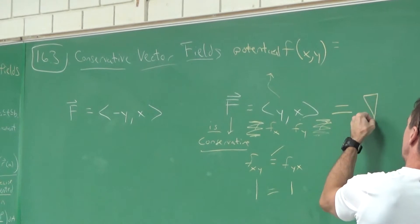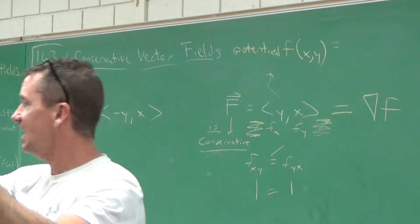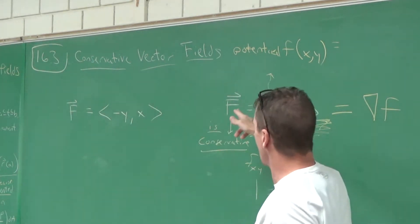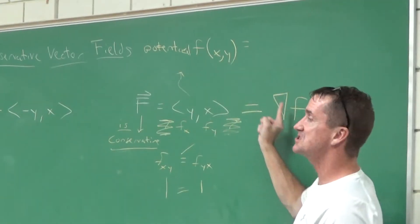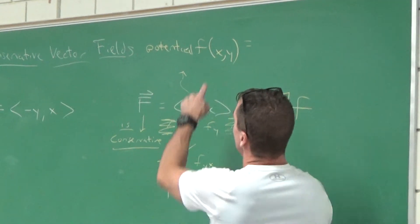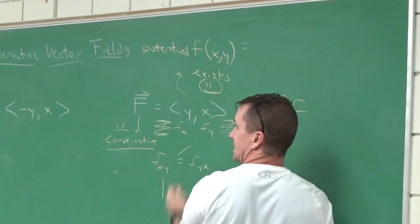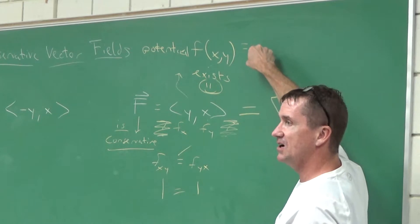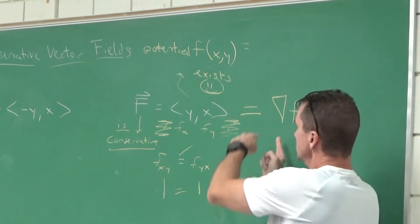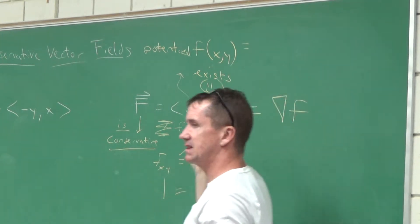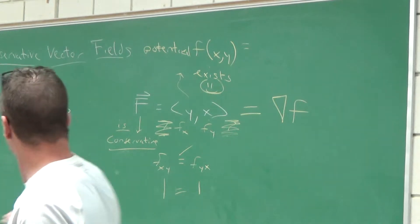The vector field F with the arrow is equal to the gradient of some function — there is a potential function that exists. We can find it by integrating: take the integral of the x-component with respect to x, and the integral of the y-component with respect to y. Both give you XY, so the potential function is XY.